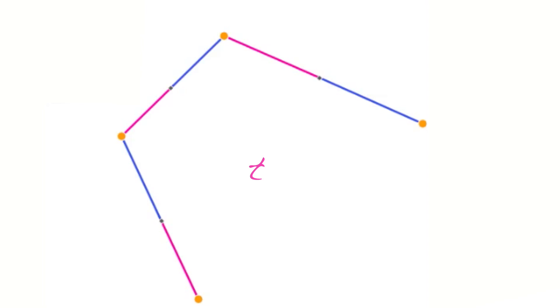So, how'd it go? Did you figure out how to extend DeCasteljau's algorithm to four points? It's not so easy, so don't worry if you had some trouble. Here's what DeCasteljau came up with. First, we used linear interpolation along with our parameter t to find a point on each of the three line segments. Now we have a three-point polygon, just like the grass blade.